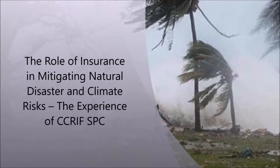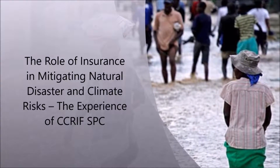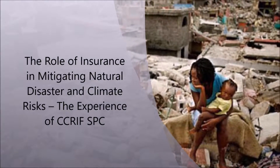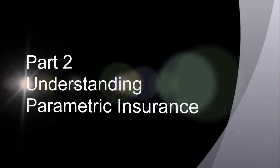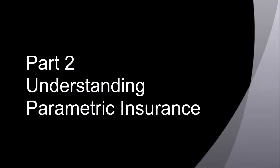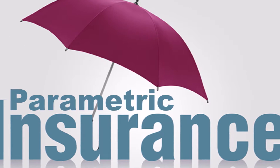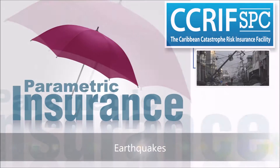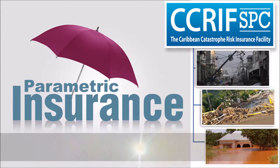The Role of Insurance in Mitigating Natural Disaster and Climate Risks: The Experience of CRIF SPC. CRIF provides what is known as parametric insurance products, currently for earthquakes, tropical cyclones or hurricanes, and excess rainfall.